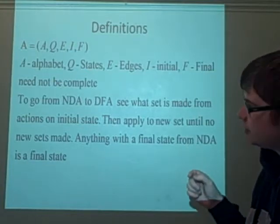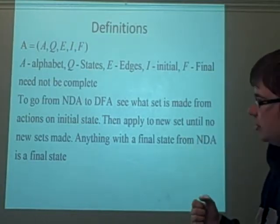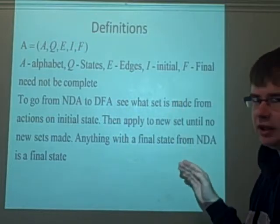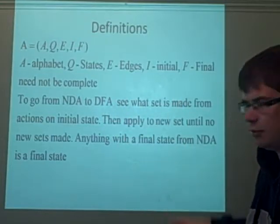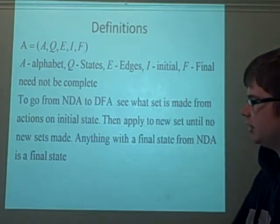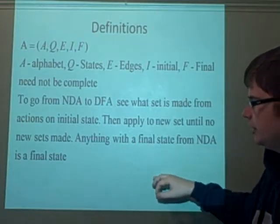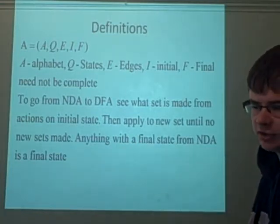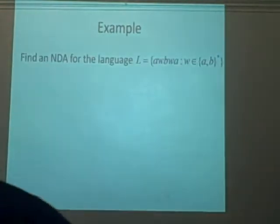Anything with a final state from the original NDA, so if it has say one, two, three and three is a final state, anything with a three in will also be a final state. So if you have one and you also have two and three, two, three together, then this would be a final state. So if that made no sense, we've got an example.